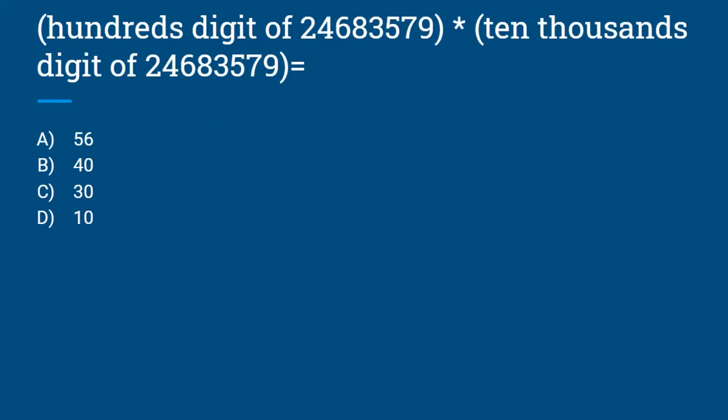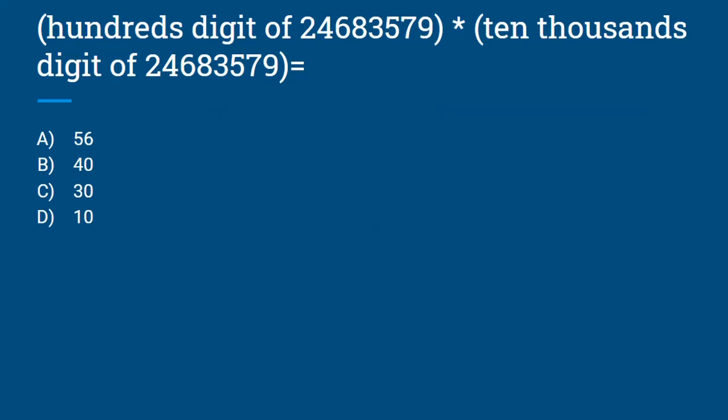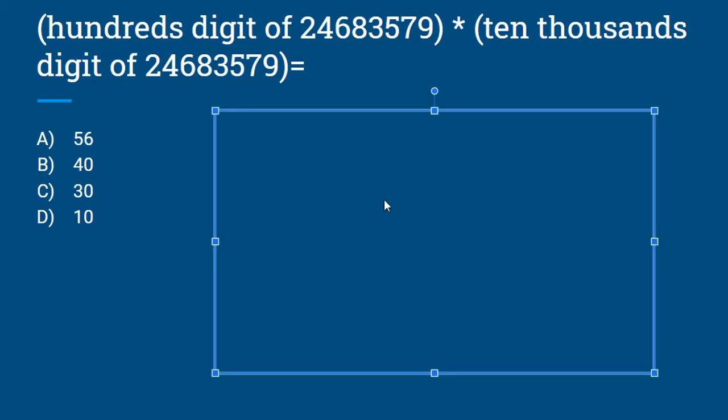Our next question is: hundreds digit of 24,683,579 times ten thousands digit of 24,683,579 equals. The 100th digit of that is 5, and the 10,000th digit is 8. So we want to multiply 5 times 8, and that would equal 40. So our answer here would be B.